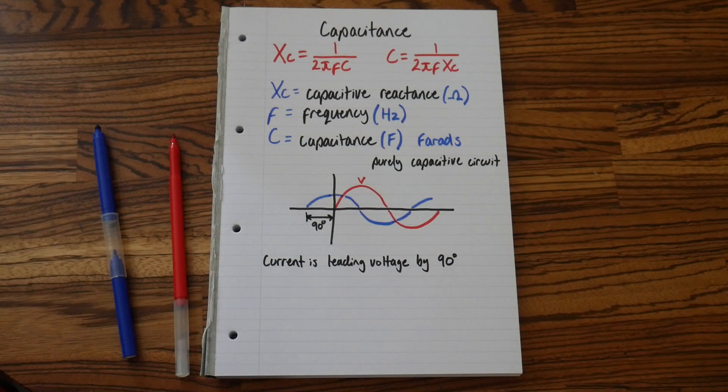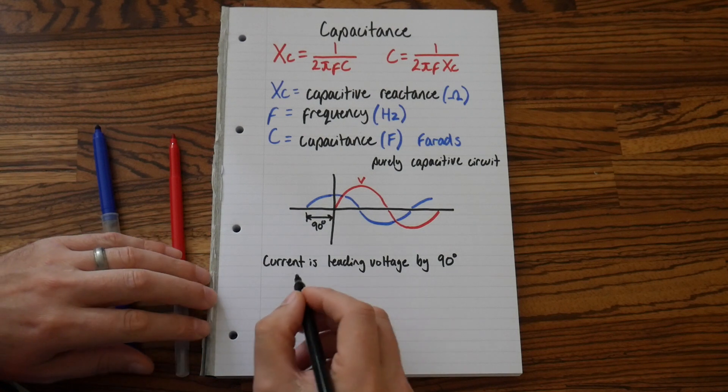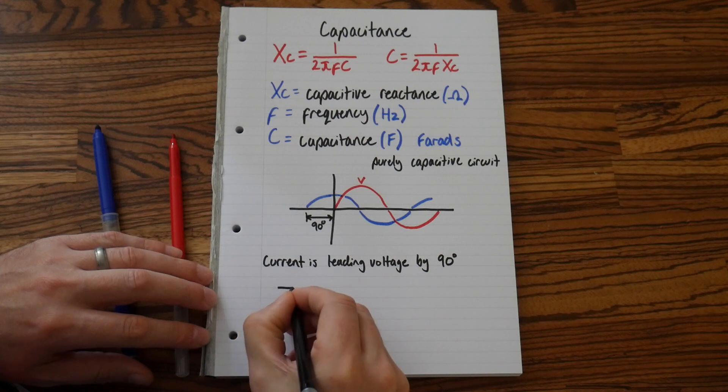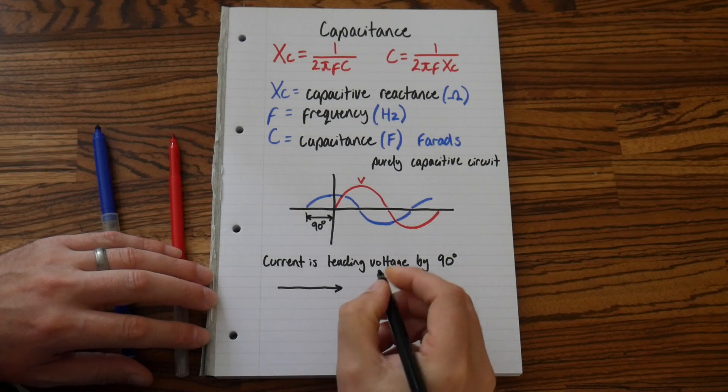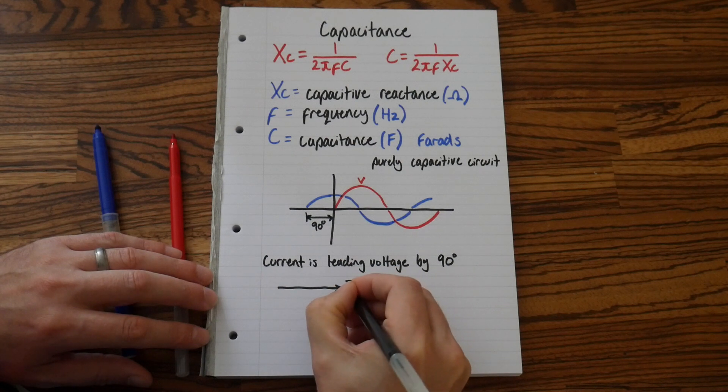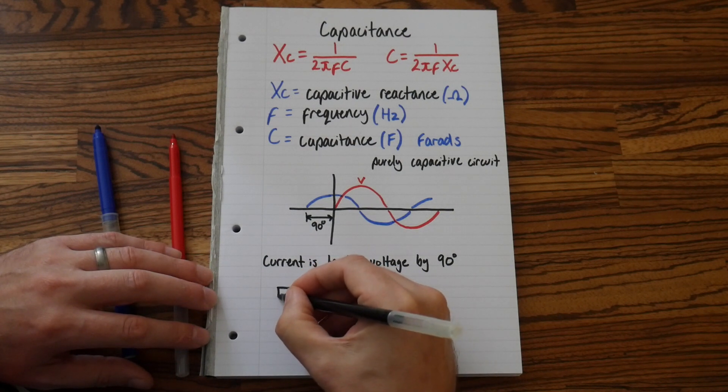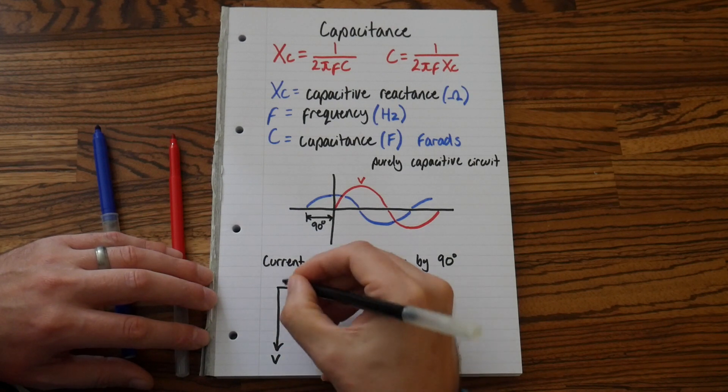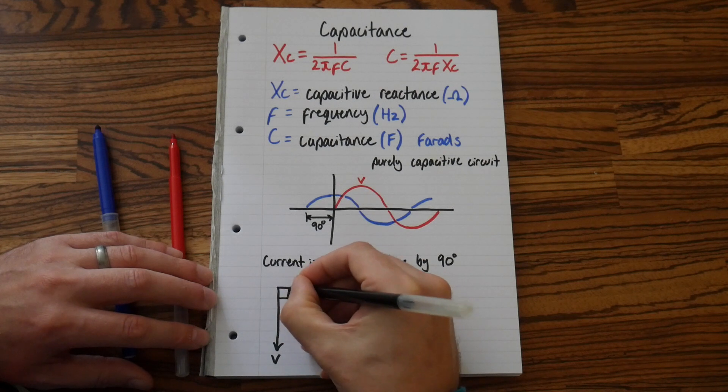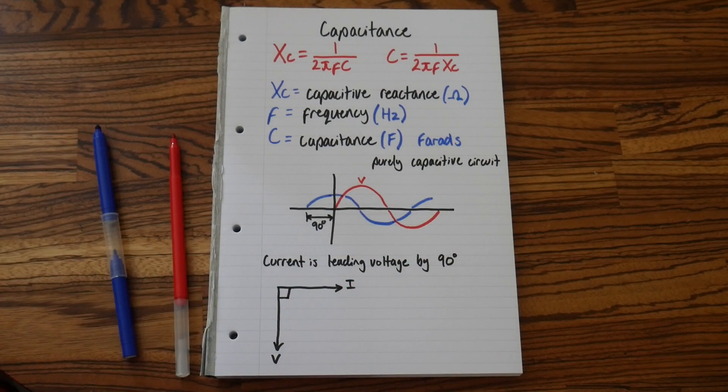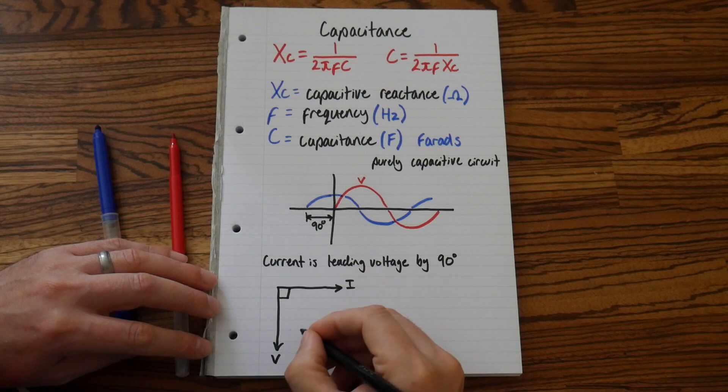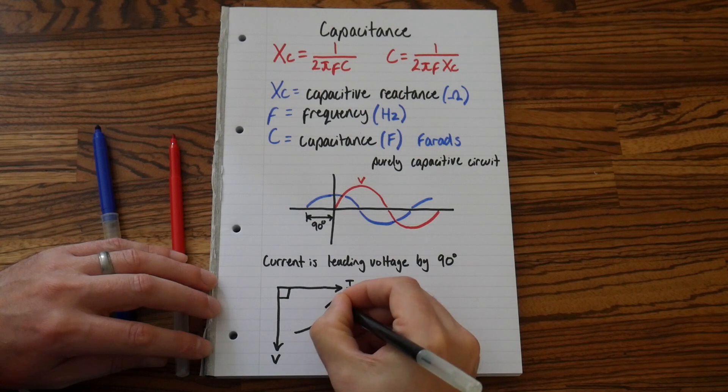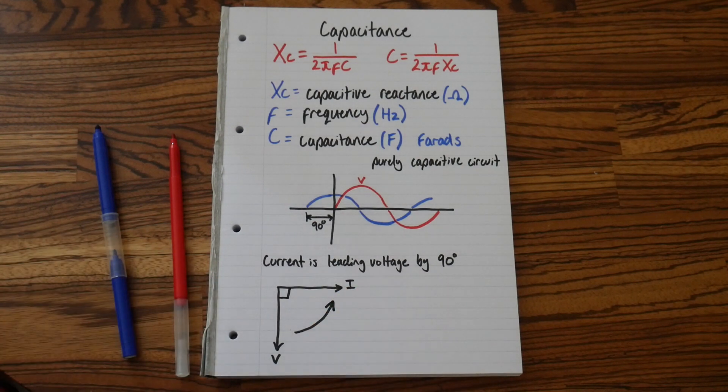Now let's draw our phasor diagram. So again we always have current is horizontal. So we always have current. And this time our voltage is going down. So we draw the square to represent that it's a 90 degree. And it always rotates anti-clockwise. So let's draw our rotational arrow.